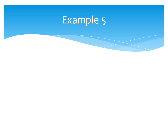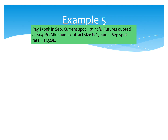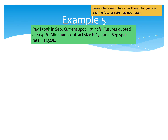Construct a hedge using currency futures for the company and show the outcome. In a nutshell, we're going to pay $500,000 in September — that's in six months' time. The current spot rate is $1.47. The September futures are quoted at $1.40 to the pound. Minimum contract size is £50,000. The spot rate we actually get in September turns out to be $1.32 to the pound. Essentially, what we're trying to do here is fix the exchange rate using the futures, aiming for that $1.40.